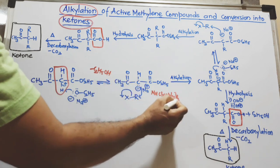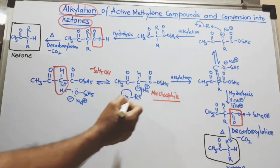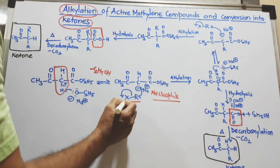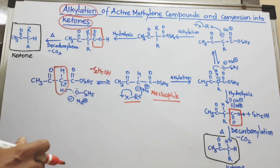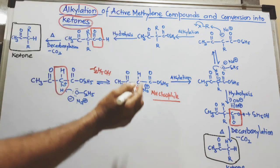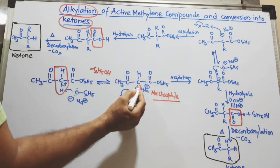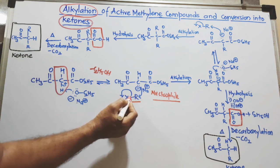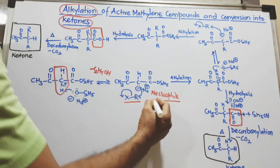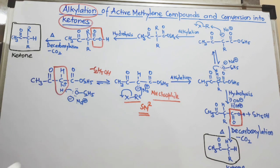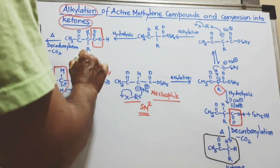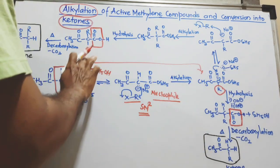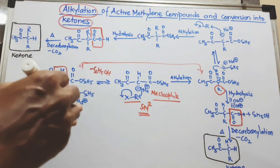Once the carbanion is formed we call it a nucleophile, and this is a nucleophilic substitution reaction. You can attach simple alkyl groups to this carbon. The carbanion acts as a nucleophile, providing an electron pair to form a bond with the alkyl group, while the leaving group is removed — this is an SN2 reaction. The leaving group X is removed and you get the alkylated product. This completes the alkylation of the active methylene compound.